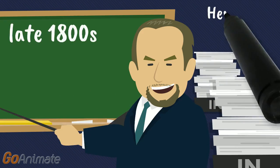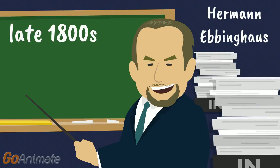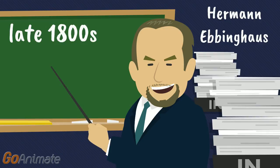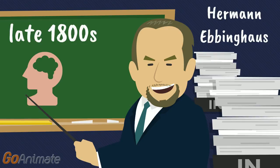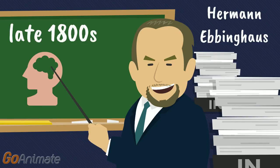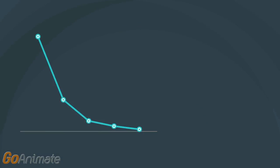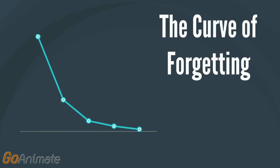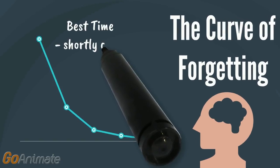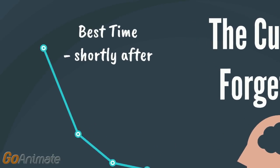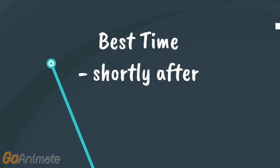In the late 1800s, there was research conducted by Hermann Ebbinghaus on memory. What he found through his research was that what we learn is forgotten exponentially after the learning session. This was where the idea of the curve of forgetting came from. We as human beings tend to forget more and more as time passes if the information is not used regularly. The research showed that the best time for recalling information is shortly after the learning session.